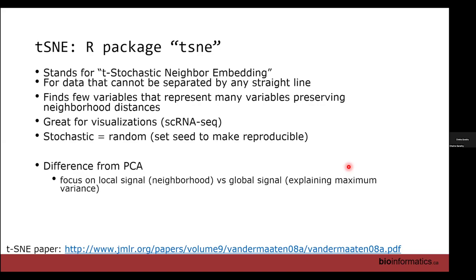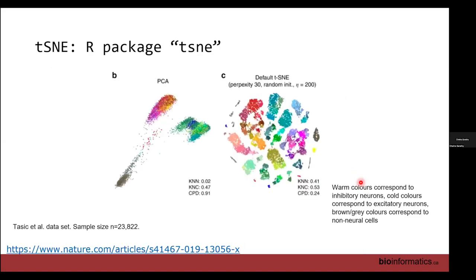The key difference between t-SNE and PCA is that PCA looks for variance in the data, while t-SNE looks at neighborhood information. Here is an example using a single-cell dataset. When PCA was applied, the plot showed colors corresponding to whether neurons were inhibitory or excitatory — warm colors like pink and red for inhibitory, cold colors like blue or green for excitatory, and brown or gray for non-neural cells like microglia and astrocytes.